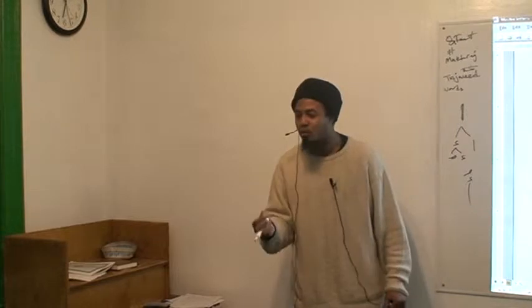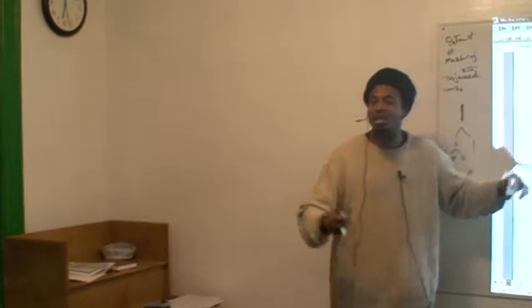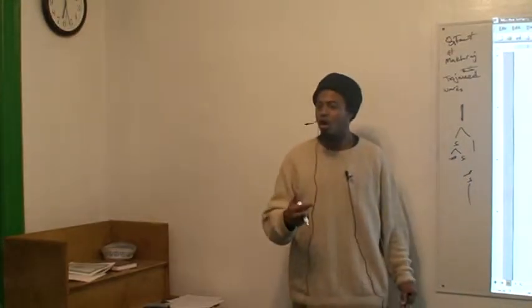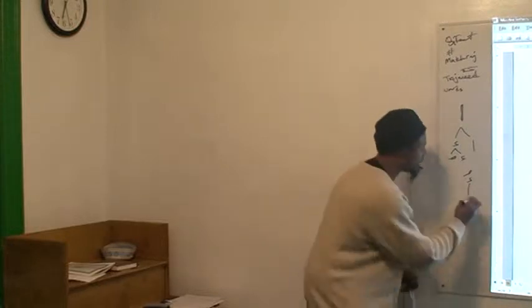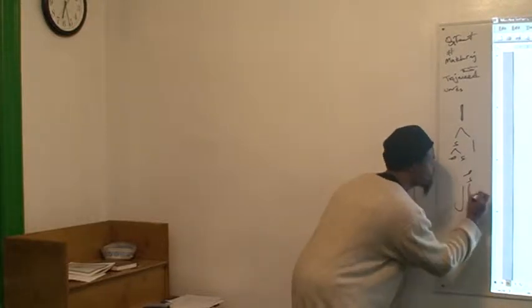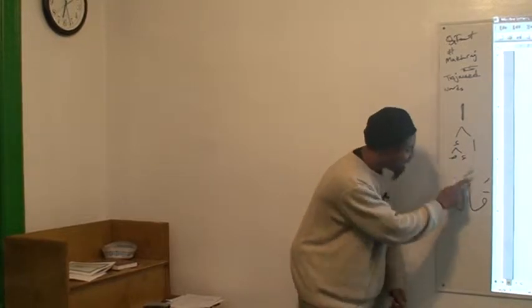So Alif comes along with madd, it comes as an elongation. Everybody say 'qala'. So you put 'qala' - the fatha is on the qaf, the Alif has nothing, it's an elongation.